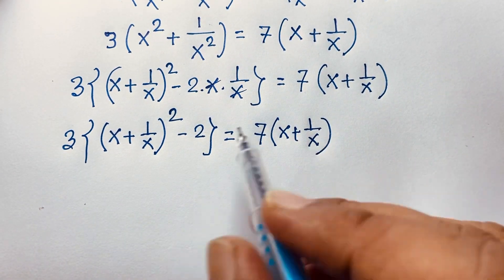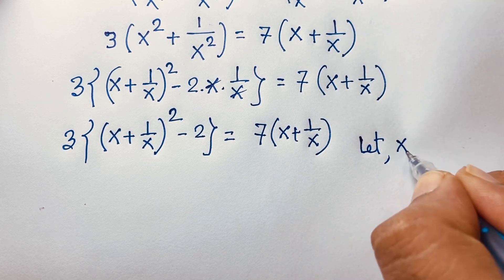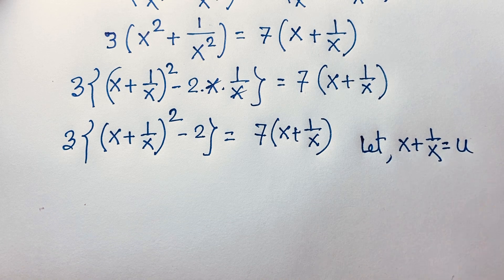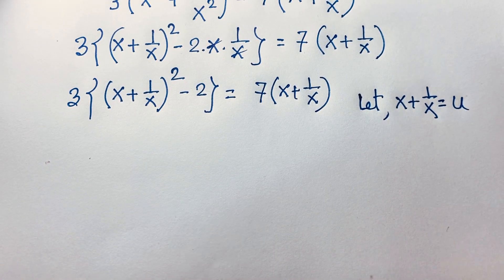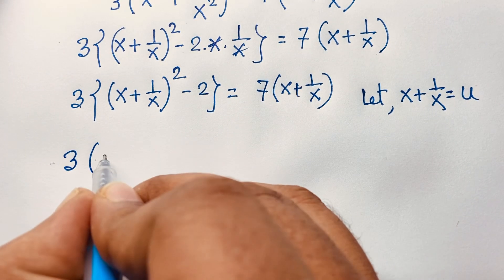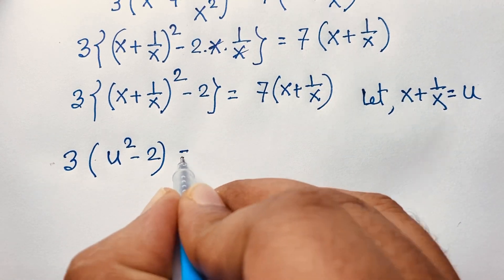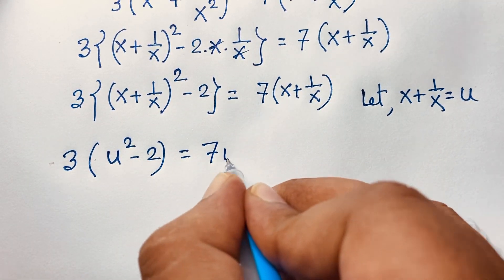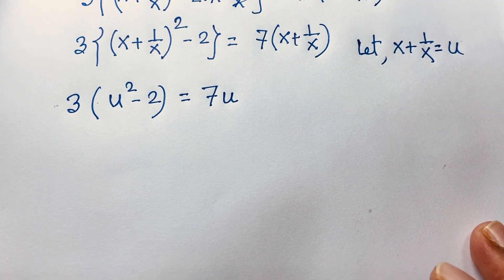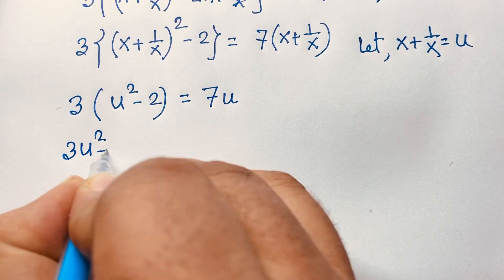Here we have x plus 1 over x on both sides, so let x plus 1 over x equal u. Substituting, we get 3 times u squared minus 2, equal to 7u.